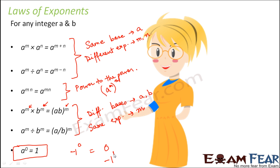But instead of 0, if it would have been minus 1 to the power 1, that means minus 1 is getting multiplied for one time, so the result would be minus 1. When minus 1 to the power 2, that means minus 1 is getting multiplied for two times, so the product would be 1. And this relation holds true for any integer, whether it is a positive integer, negative integer, or anything. Anything to the power 0 is always equal to 1. So that's a very basic law and a very important one as well.